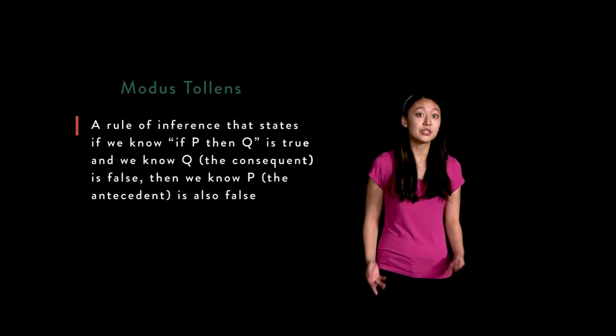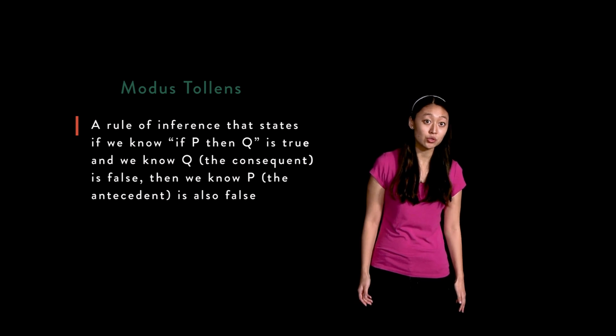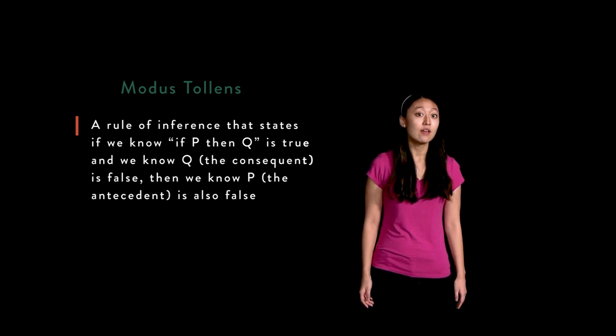Then there's modus tollens. It's a rule of inference which states that if we know a hypothetical 'if p then q' is true, and we know the consequent q is false, then we can infer that the antecedent p is also false.